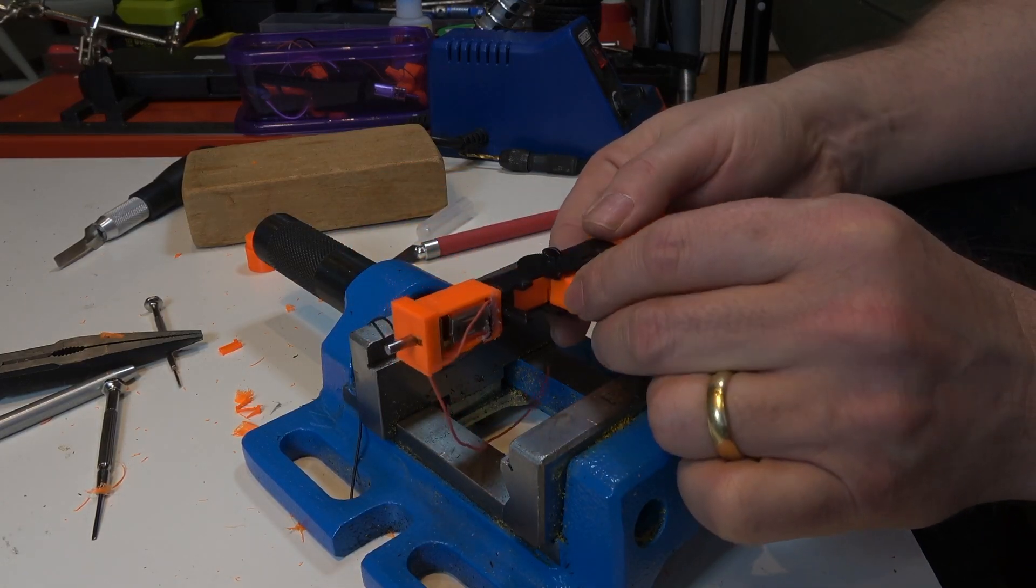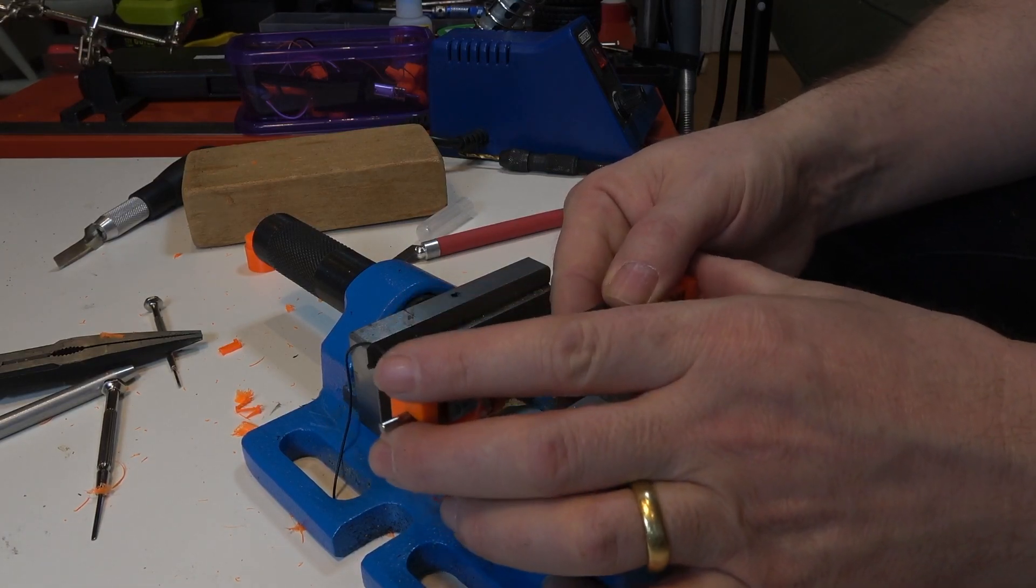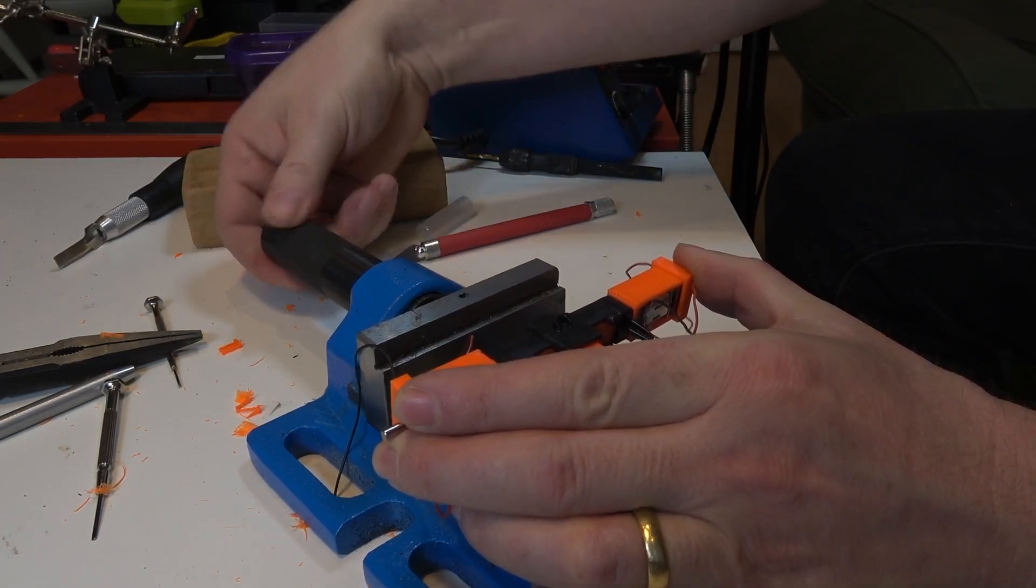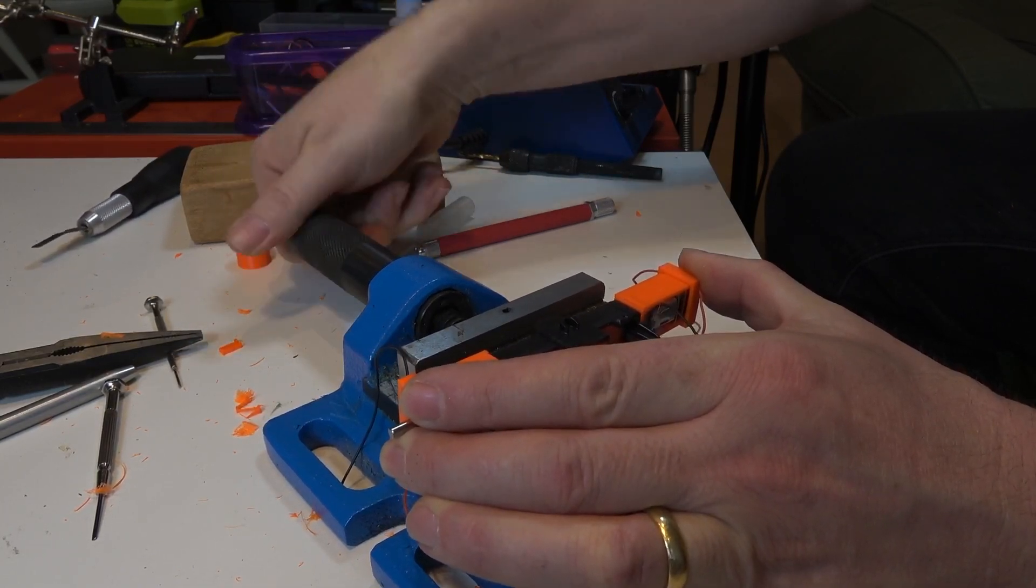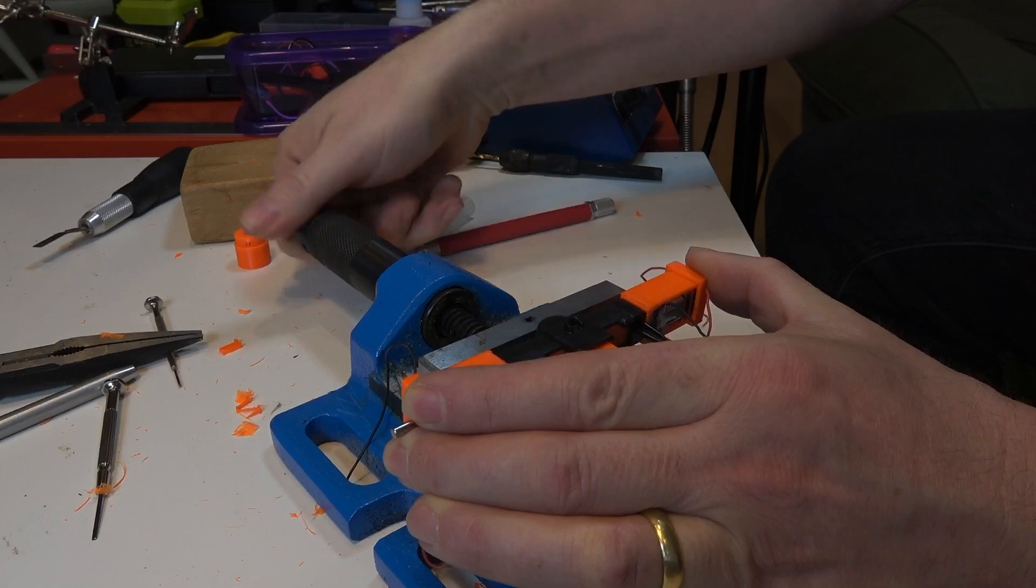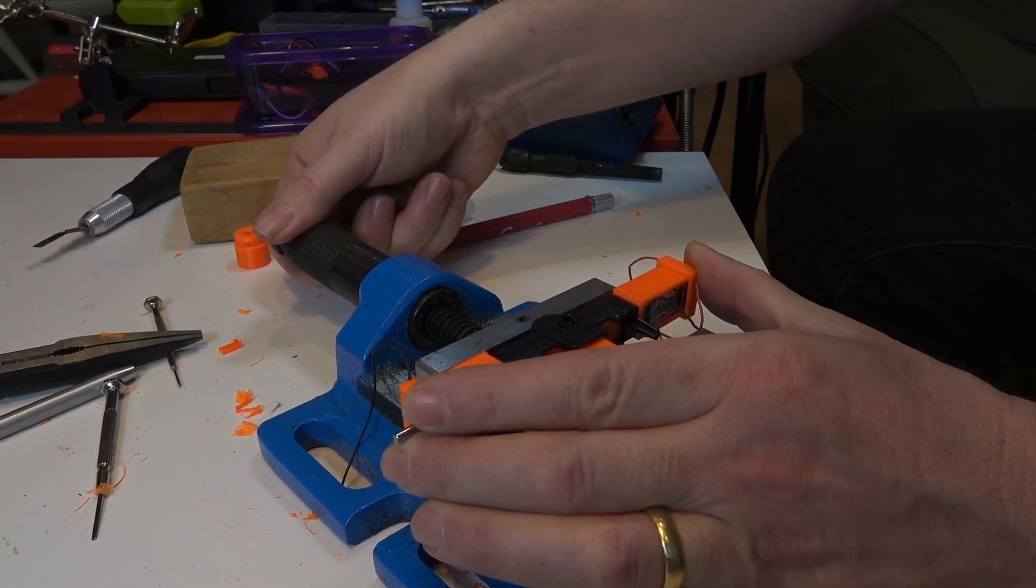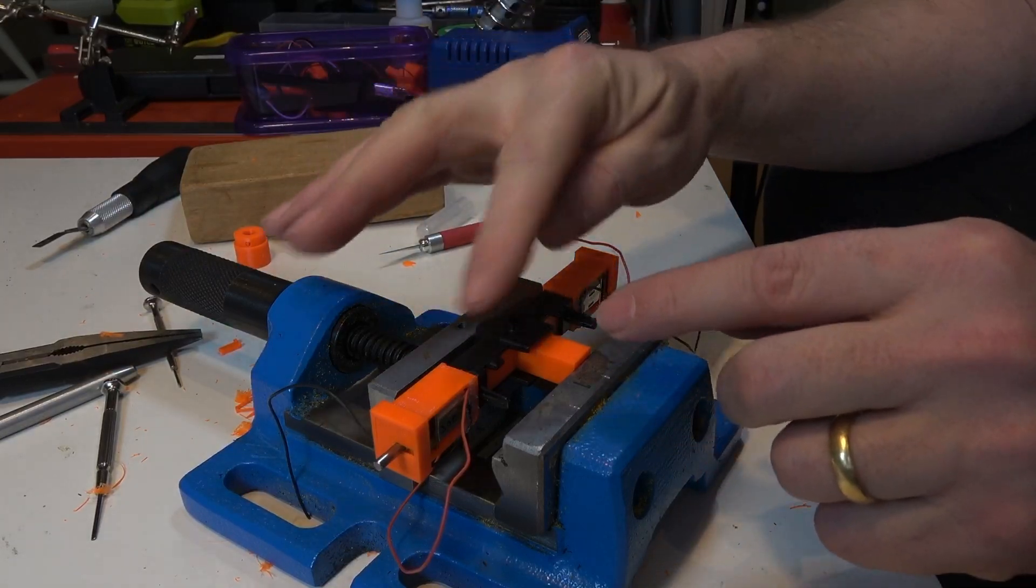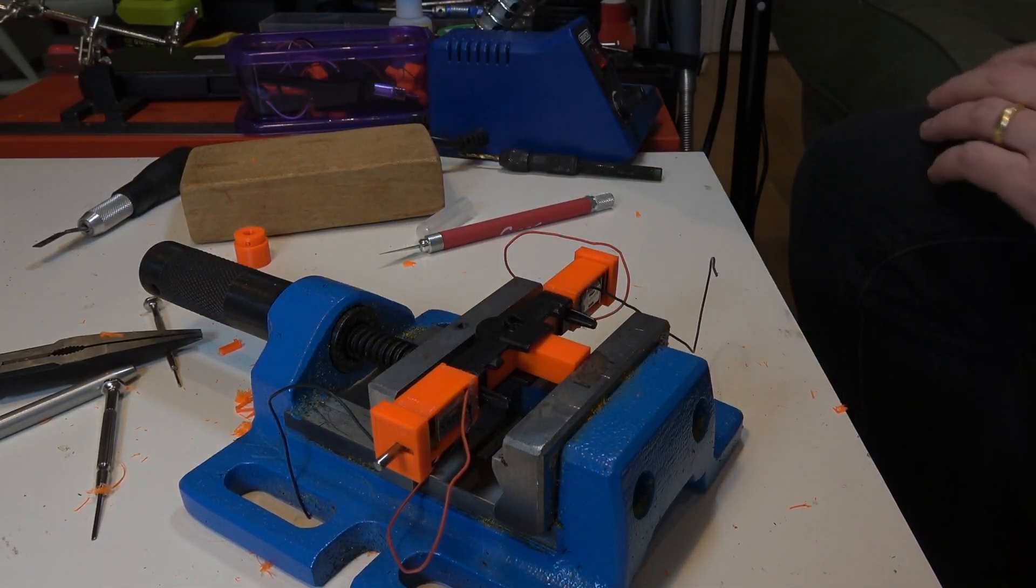What we're going to do now is take this little block, which I included with the 3D prints, and we're going to use that to push it down so that we can put a retaining screw in there to stop things moving around. So I'll just do this up, making sure I'm not snagging any wires.